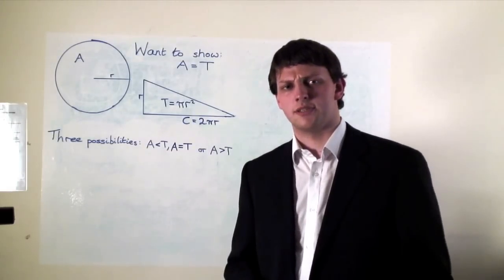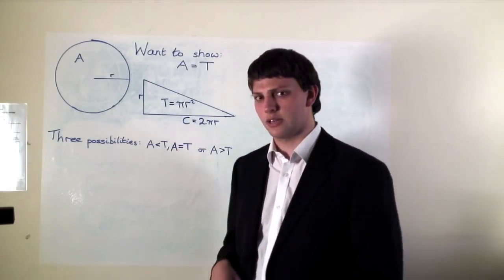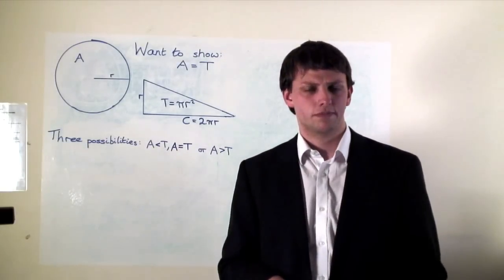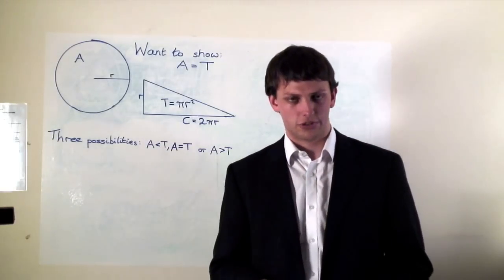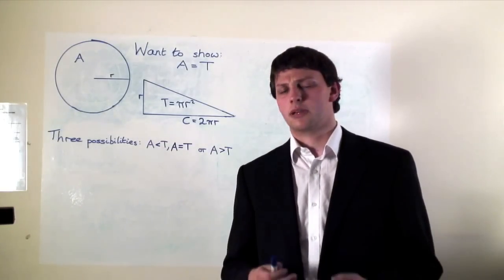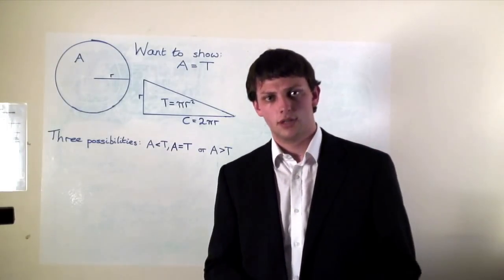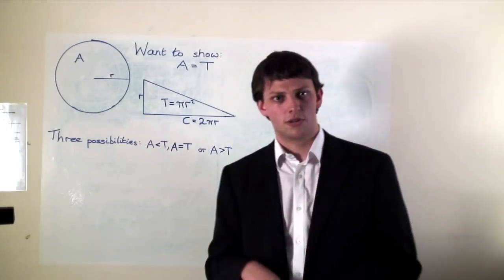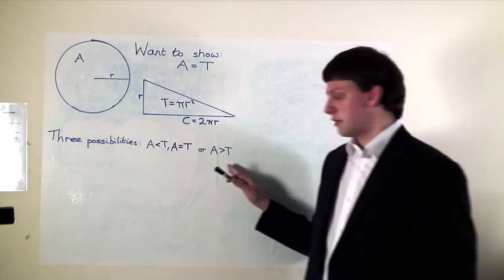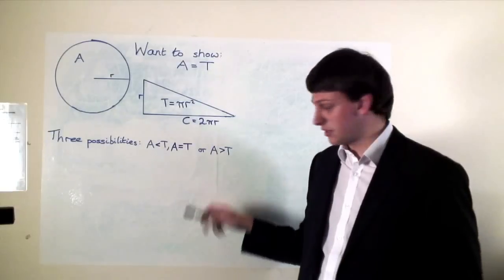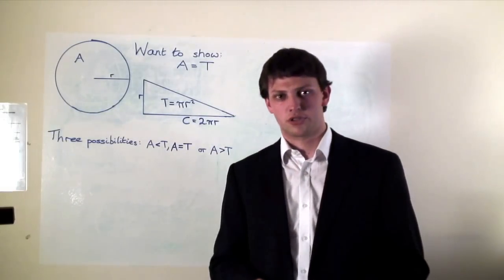So what we want to show is that the area of the circle equals the area of the triangle. There are only three possibilities: the circle is smaller than the triangle, the circle and the triangle have the same area, or the circle is bigger than the triangle. We're going to use a common mathematical technique called proof by contradiction — we assume something is true, show that something impossible follows, and conclude the assumption must be false. We'll eliminate the first and third cases, leaving only that the circle and triangle have the same area.